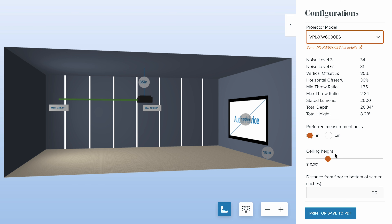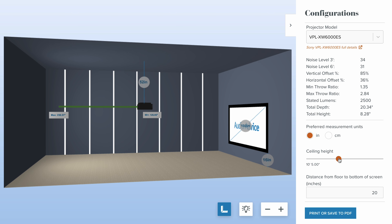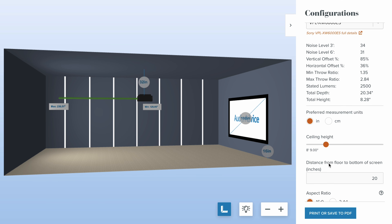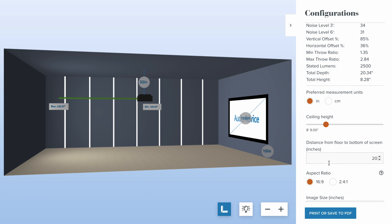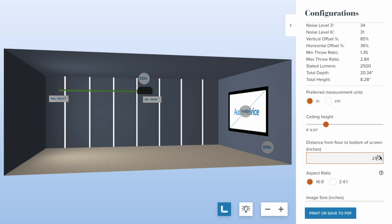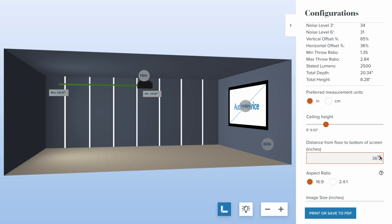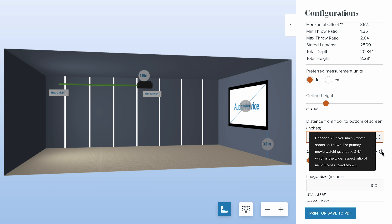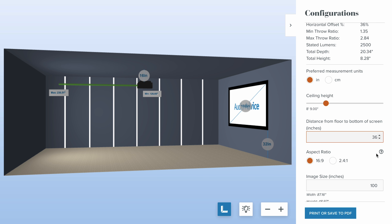You set your ceiling height, and as I adjust it, look at what's happening to the projector and everything else in the room. Now I can set the distance from the floor to the bottom of the screen — let's set that at about 36 inches. By the way, you'll see everywhere in this tool, just like in the home theater design tool, there's a little tech tip that explains what you're doing. Now we can set our aspect ratio — you and I like scope, so we're going to go to scope here.